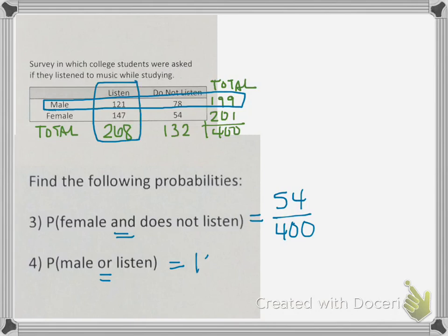So all of the males are 199. All that listen to music is 268. But do you see where they cross? We have 121 that are counted in both the males and those that listen to music. We don't want to count them twice. So in this case, we're going to subtract the 121 so they're not counted twice. When we add and subtract these numbers, we get 346. And now this number is going to again be out of everybody in the chart, which is out of 400.